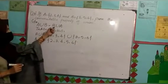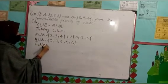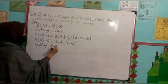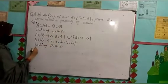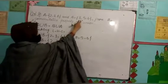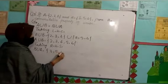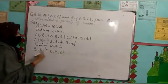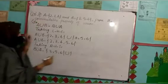Now taking right hand side. Right hand side, we have B union A. Now the first one is B. So B set, write {3, 5, 6}. Then sign union. A set is {2, 3, 4}.